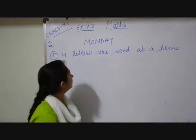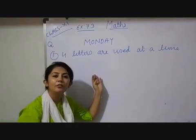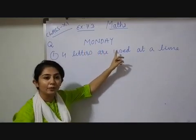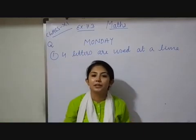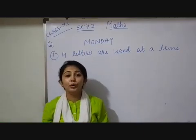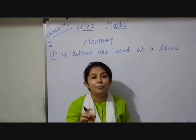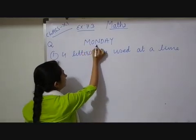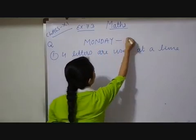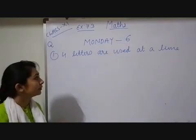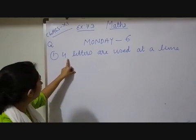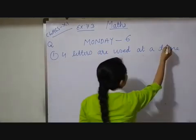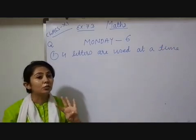Now, you have to form some words by using the word MANDI. First of all, whatever word is given to you, you have to find out how many letters are there. So here we can count: 1, 2, 3, 4, 5, 6. Total 6 letters are there. In the question, four letters are used at a time.